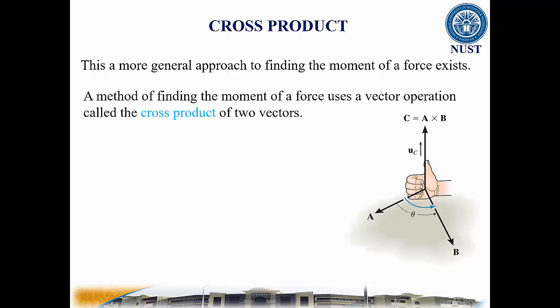This more general method of finding the moment of a force uses a vector operation called the cross product of two vectors. In general, the cross product of two vectors A and B results in another vector C, such as C equals A cross B. The magnitude and direction of the resultant vector can be determined as C equals A cross B and that's further equal to A times B times sine theta times unit vector.